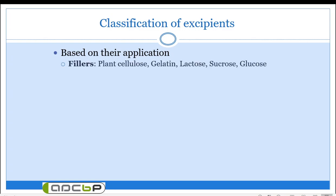The most important classification is based on their application. As you are aware, excipients are not therapeutically active — they are inactive substances — but they are necessary to convert the API into a formulation. Based on their application, the first class is fillers, such as plant cellulose, gelatin, and lactose.